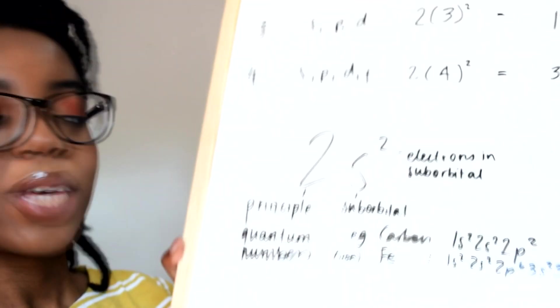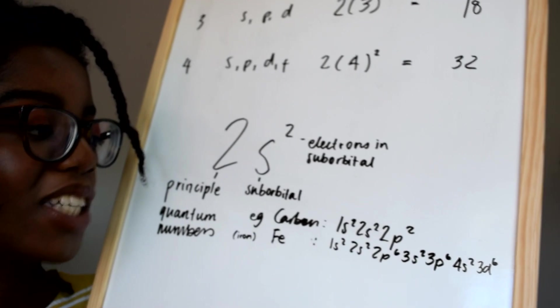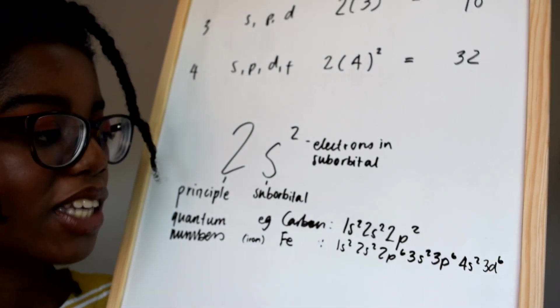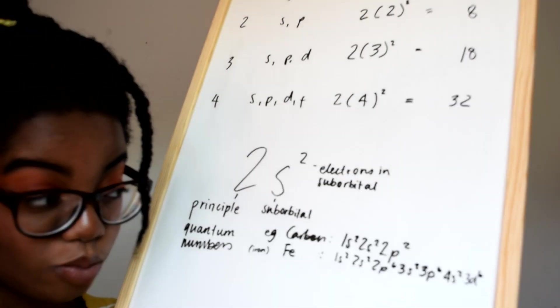So the electronic configuration would be 1s2, 2s2, 2p6, 3s2, 3p6, 4s2, 3d6. And why 4s2 you ask?